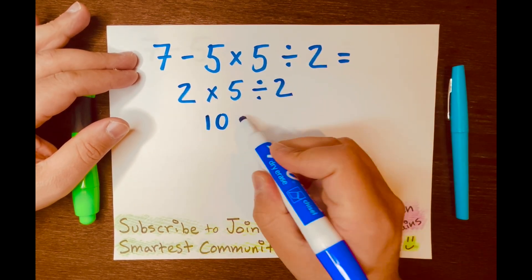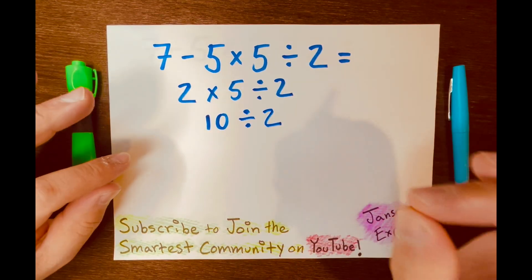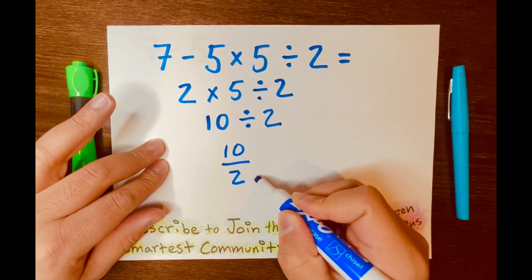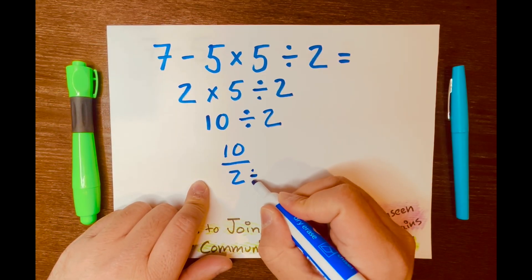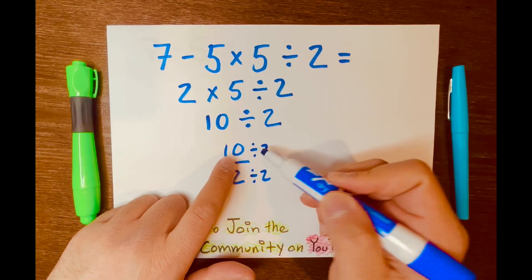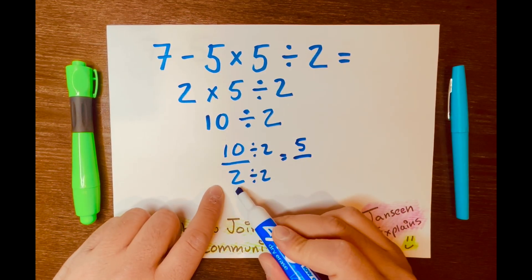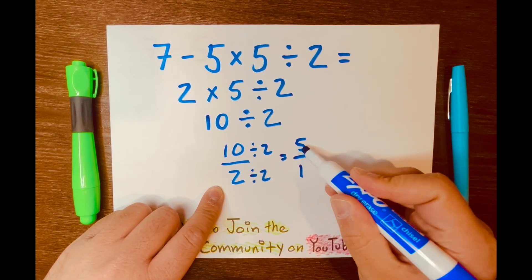And bring down the division symbol and the 2 down. Some people will write this 10 divided by 2 in fraction form, and knowing that both numbers are even, they'll break it in half or divide. 10 divided by 2 equals 5 over 2 divided by 2 equals 1, and we all know 5 over 1 equals 5.